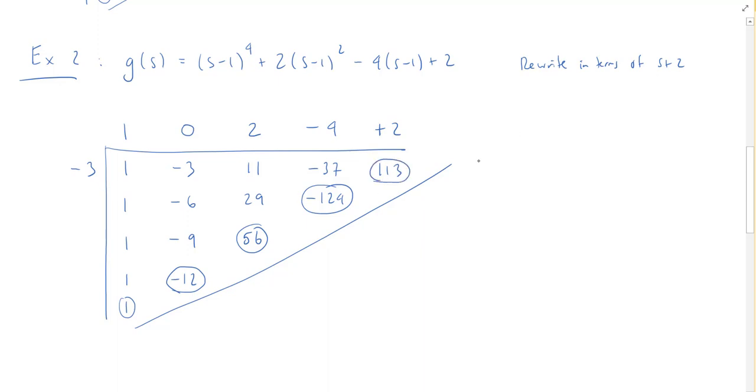Okay, and so we can now rewrite our g(s) in terms of s + 2 as (s + 2)⁴. We are going to get a cubic now, in fact it'll be -12, so -12(s + 2)³ + 56(s + 2)² - 124(s + 2) and then + 113.